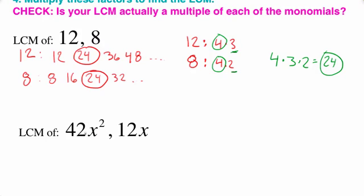So what we're going to do is we're going to factor it. So we have 42x squared, and then we have 12x. We're going to factor these things.